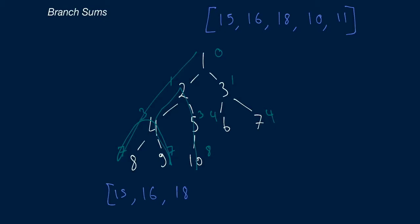At this point we go back up, and as you can see, this is our solution array — this is what we wanted to return from the beginning. We've probably passed down this array to our recursive function. At this point, we have it filled up and we can return it as part of our main function and be done with the algorithm.